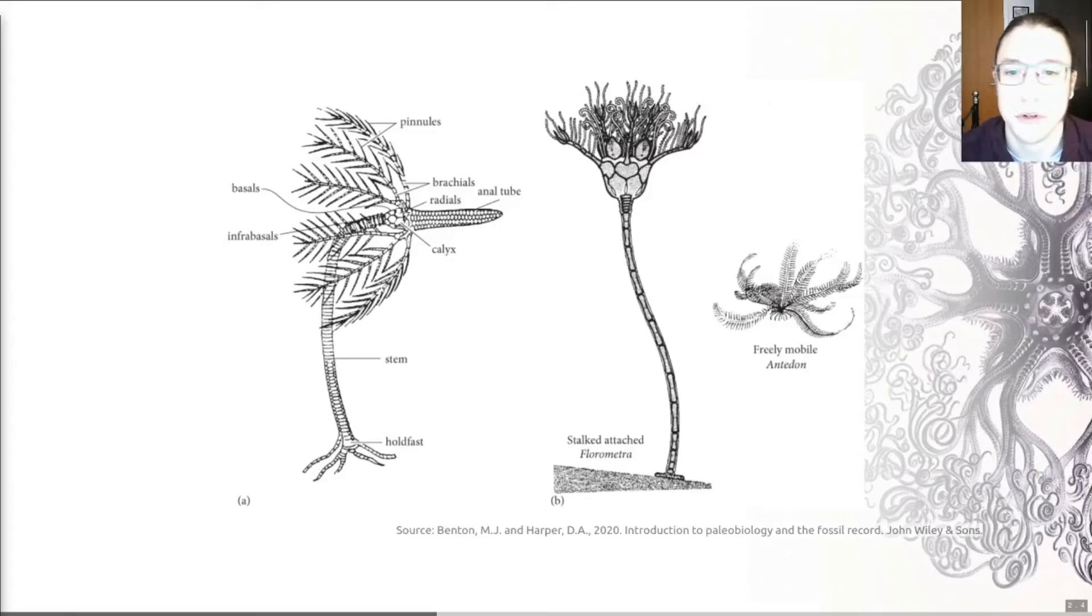Most fossil crinoids and about 25 recent genera are stalked forms such as the one you can see here attached to the seabed. In modern oceans, however, the crinoid community is dominated by a group that has a mobile adult form. You can see an example here, and these move like pneumatic umbrellas once they become adults after their attached juvenile form. So that's a quick lowdown on crinoid morphology.